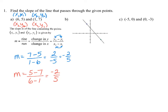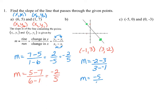In part b, we're given a graph, so we identify the coordinates of the points. We have a point at (−1, 3) and another at (3, −2). Using the slope formula, the numerator is −2 minus 3, which equals negative 5, and the denominator is 3 minus (−1), which equals 4. So the slope for part b is negative 5 over 4.